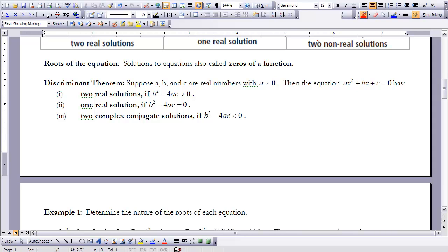So, the first situation. Suppose a, b, and c are real numbers with a not equal to zero. Then the equation ax squared plus bx plus c equals zero has two real solutions if your discriminant b squared minus 4ac is greater than zero. It has one real solution if b squared minus 4ac is equal to zero. And it has two complex conjugate solutions if b squared minus 4ac is less than zero.